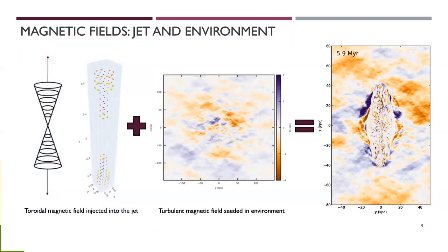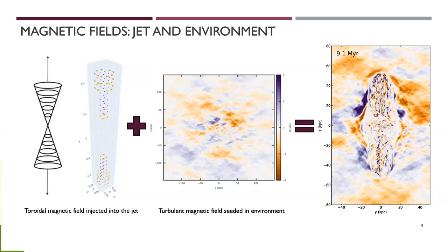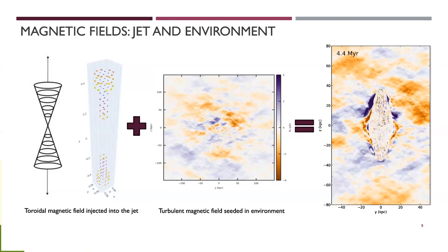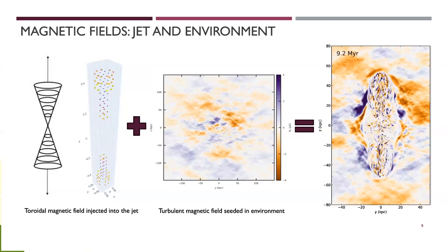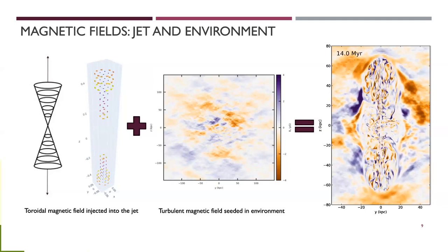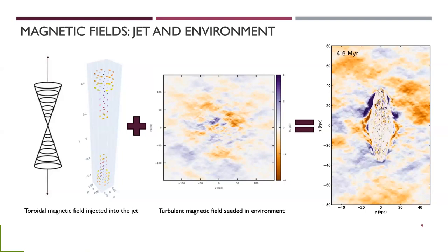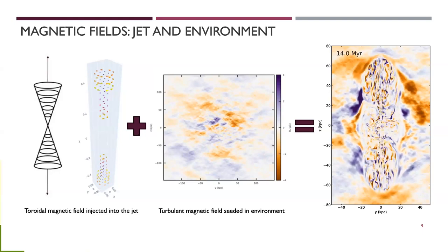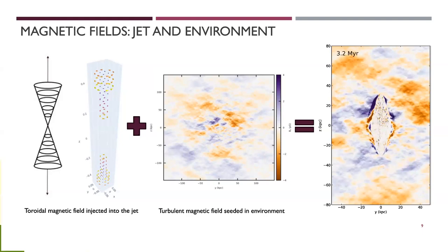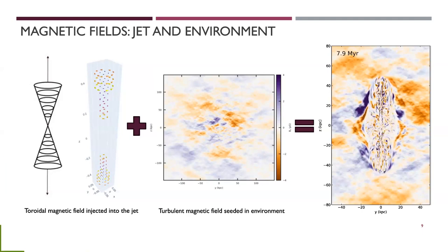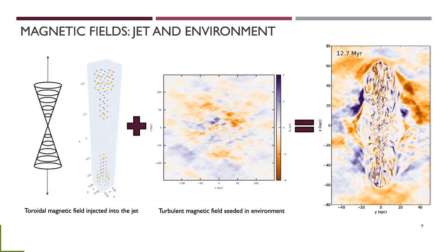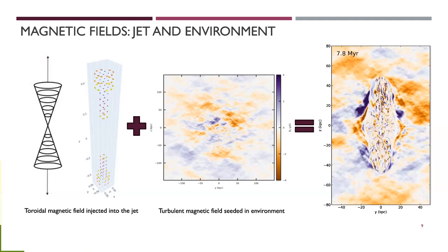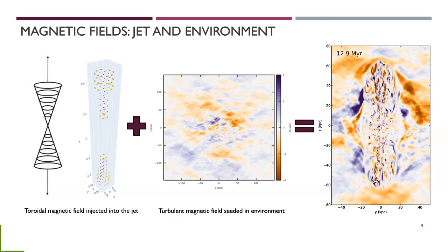There are two main magnetic fields in these simulations: the jet and the environment. In the jet, I'm injecting a toroidal field. It's a conical jet, so we've got loops going up the cone — we've got 2D and 3D representations here. In the environment, we've seeded that with a Kolmogorov turbulent spectrum. We can put these two things together and get a nice-looking jet with this magnetic field.